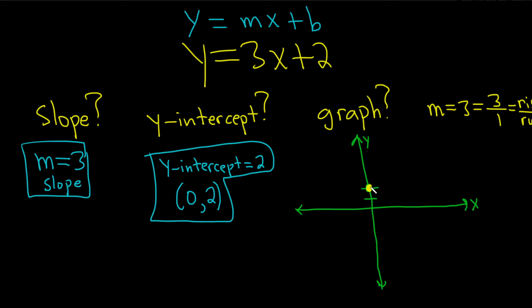So from the y-intercept, we're going to rise 3 and run 1. So we'll go up 1, 2, 3, and go right 1. So rise 3, run 1, and that'll put us here.